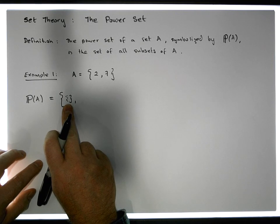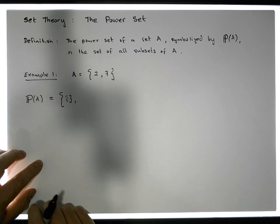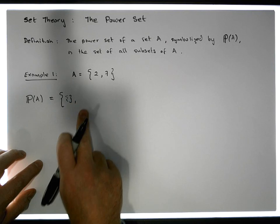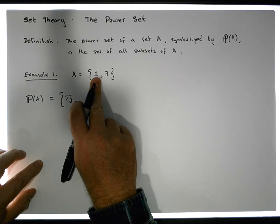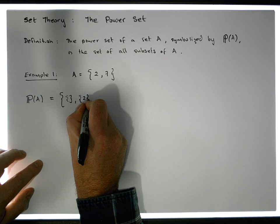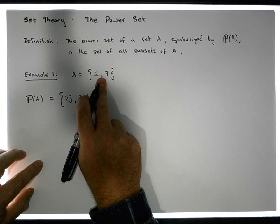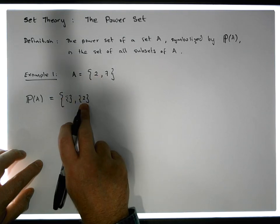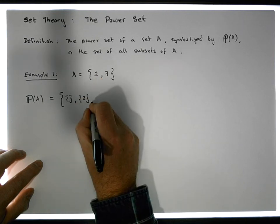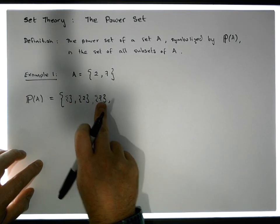The next possible size up from the empty set is sets that have just single items — singletons. We have two elements in A, so the next possible subsets are all possible singletons whose elements are taken from A itself. If we take the first element, two, and put it in a set, we get a singleton. This set is a subset of A because its only element, two, is contained in A. The next singleton is {7}, and the set containing seven is also a subset of A.